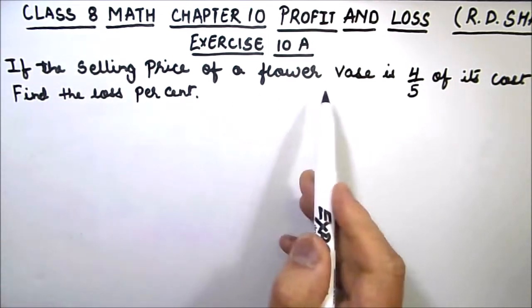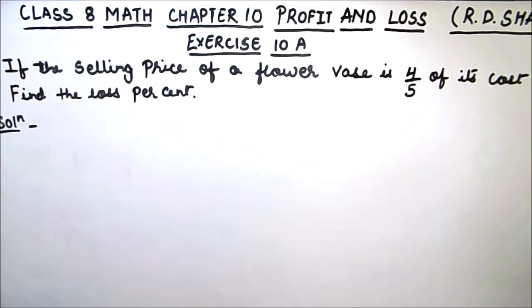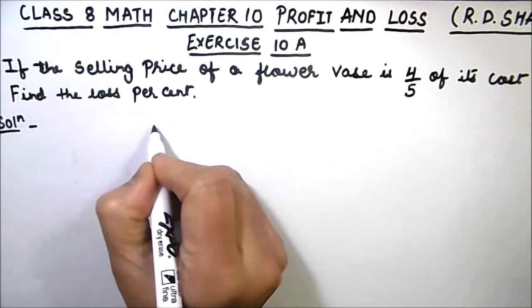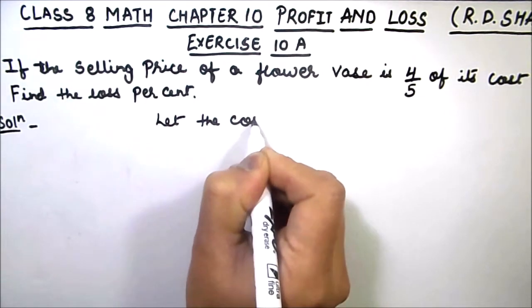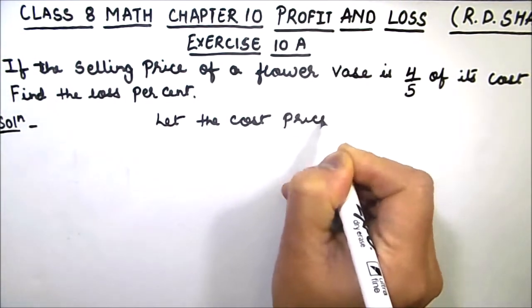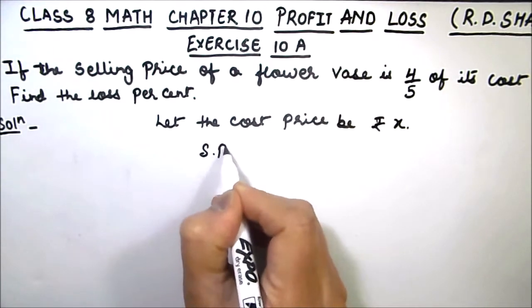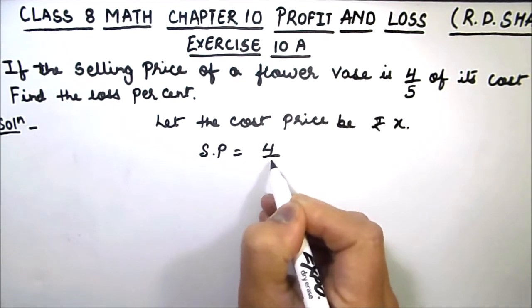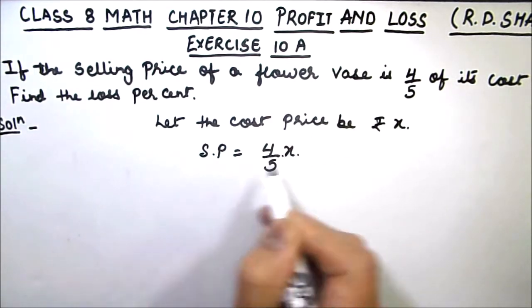In the question it is given that the selling price is four-fifths of the cost price. So let the cost price be x. When cost price is x, selling price will be four-fifths of the cost price which is x. So selling price is 4/5 x.